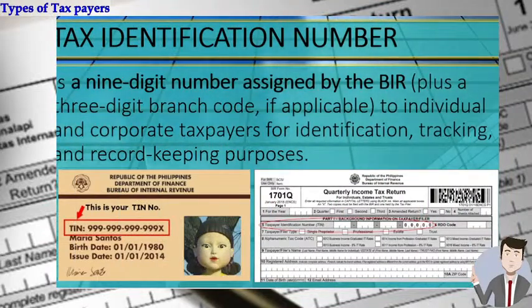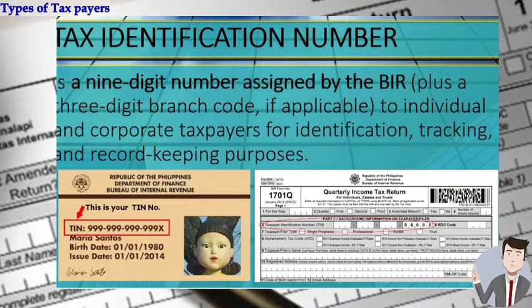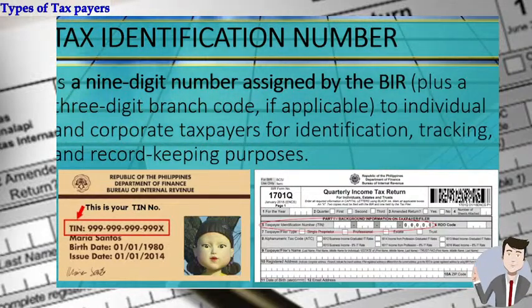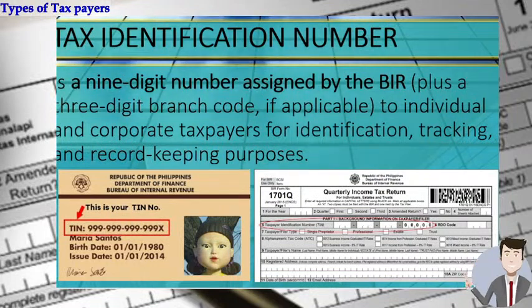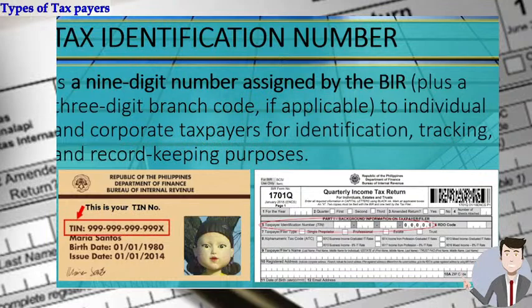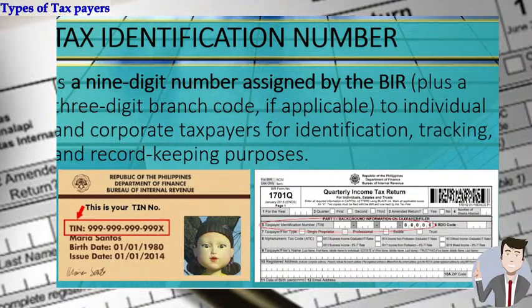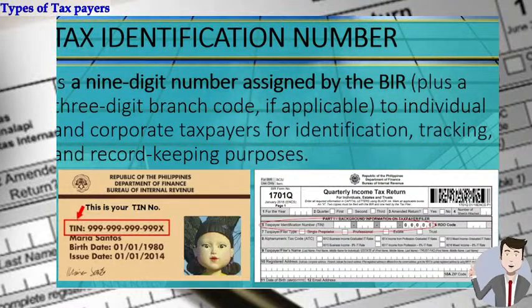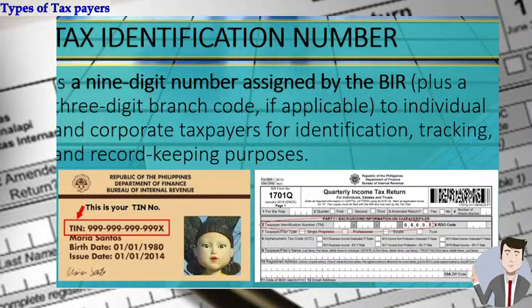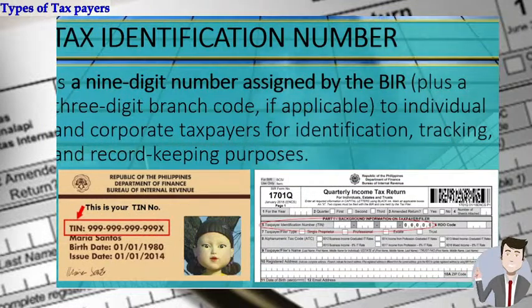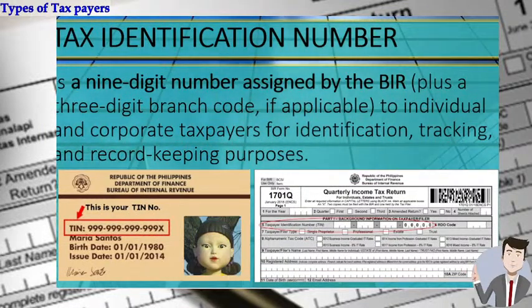We also have the tax identification number or TIN. It is a nine-digit number assigned by the BIR, plus a three-digit branch code if applicable. The first nine digits are your TIN, and the last digits are your branch code. If your business has multiple branches, the main branch bears the code 0000, the first branch 0001, the second branch 0002, and so on. You consolidate all income from all branches and compute and pay taxes at your main office.